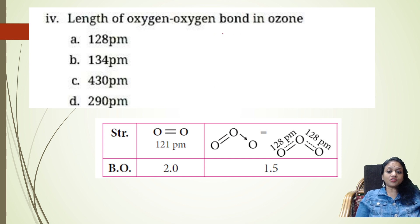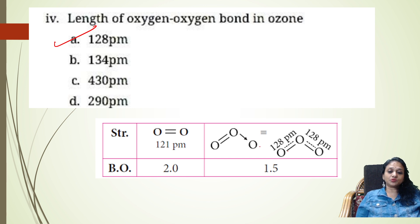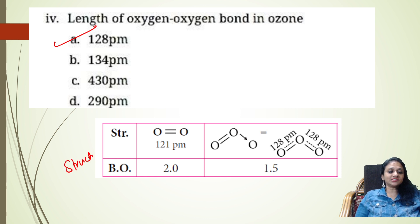Question 4: What is the length of the oxygen-oxygen bond in ozone? The O–O bond length in molecular oxygen is 121 picometres, while in ozone it is 128 picometres. Structures are very important, so please learn them.